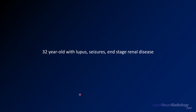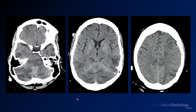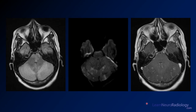Our next case is a 32-year-old with lupus, seizures, and end-stage renal disease. Here you see images from a CT. The CT isn't normal — you have areas of hypodensity in the temporal lobe. The cerebellum looks a little swollen, and you may not see the fourth ventricle well. Additionally, in the superior cerebellum, left temporal lobe, and maybe up in the left MCA distribution, there are patchy areas of abnormality. You want to go ahead and get an MRI to see what's truly going on.